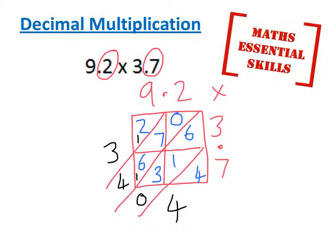Or follow your decimals down. The decimals go down and across and meet at this point. They go down the slide to show you that the decimal point goes here. My answer is 34.04.